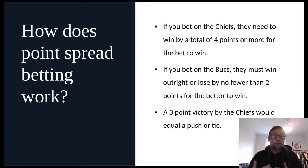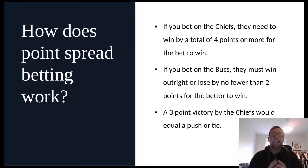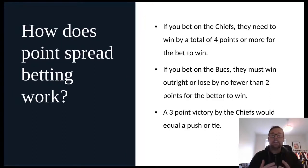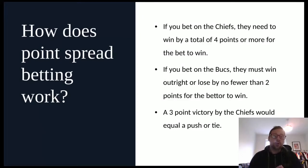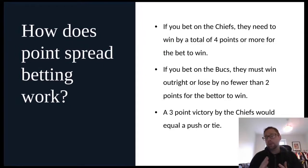To break down how this actually works: if you're going to bet on the Chiefs today, they need to win by a total of four points or more for the point spread bet to win — they would cover the spread. Anything fewer than four points — one, two, or three — and this bet is a loser. So if you want to bet on the Chiefs on the spread, they've got to win by four or more points against the Bucks in the Super Bowl.